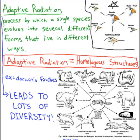Adaptive radiation is very similar to homologous structures, where you have one type of mammal at the beginning that then evolves into many different kinds of animals that use their limbs for different functions. Adaptive radiation leads to a lot of diversity within the genus or within the group, so there's a lot of variation and genetic diversity that results from this.